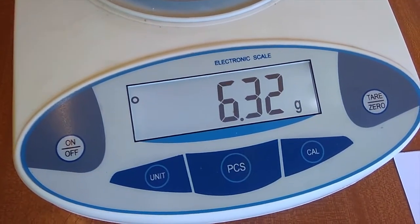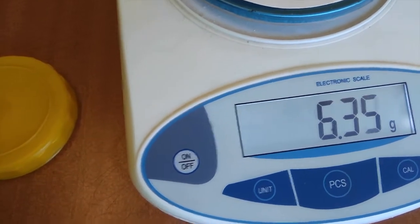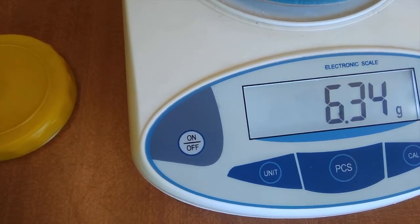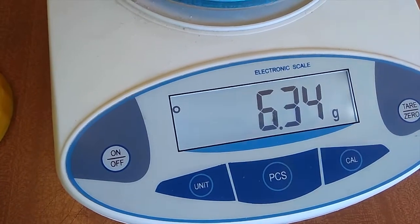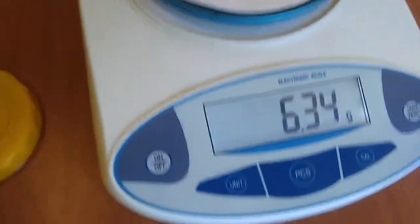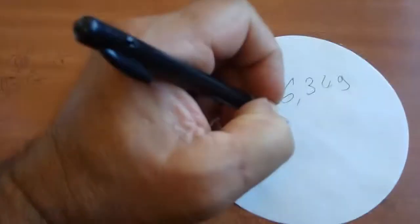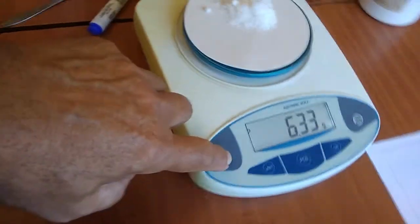It says 6.32 grams, 6.34 grams. As I speak, my breath is pushing down on the scale. Let's take 6.34 grams. We're going to write that down: 6.34 grams oxalic acid. Now we can switch the scale off.